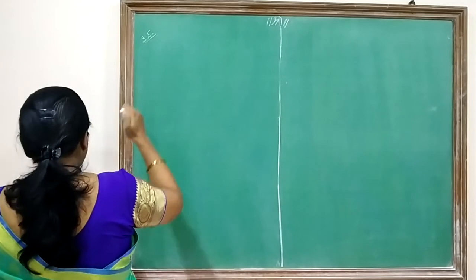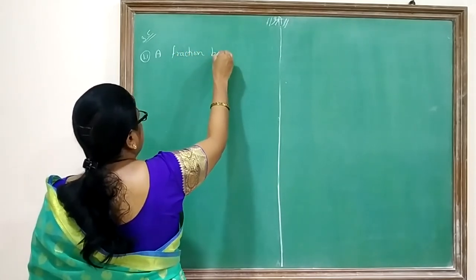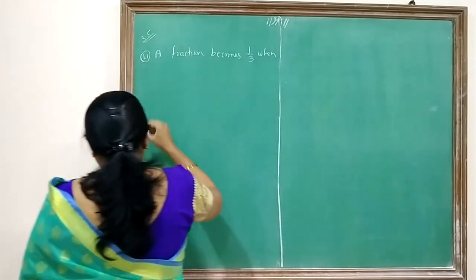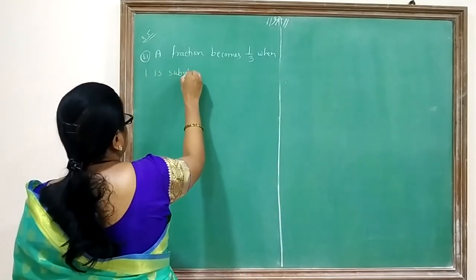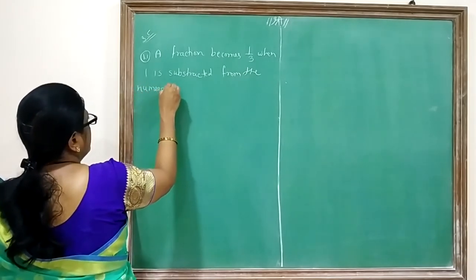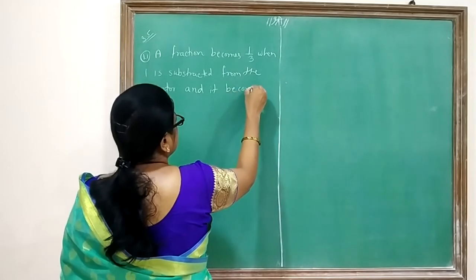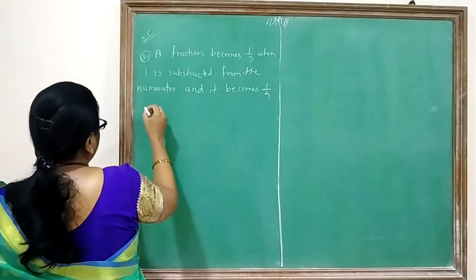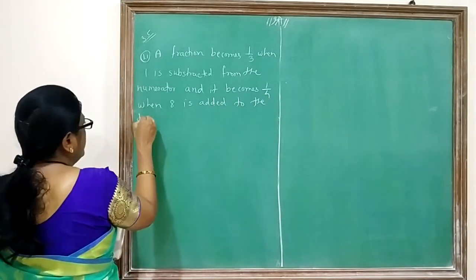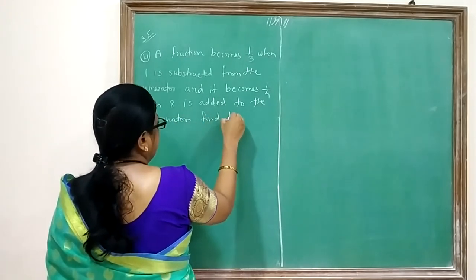Next example: A fraction becomes 1/3 when 1 is subtracted from the numerator, and it becomes 1/4 when 8 is added to the denominator. Find the fraction.